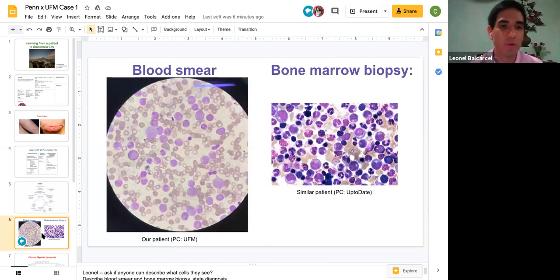So I think we can go ahead and actually, because you guys asked for the peripheral blood smear and bone marrow biopsy, if Leonel can share those, we can go ahead with that. Okay. So can someone from UPenn and from UFM volunteer to describe the peripheral blood smear findings and the bone marrow biopsy?